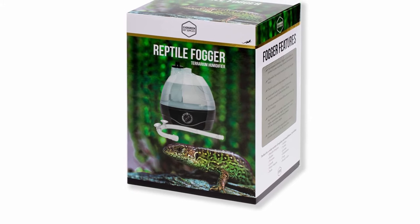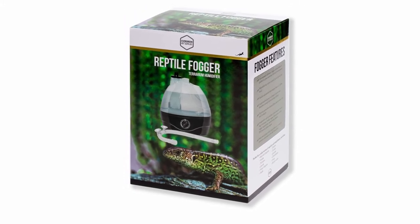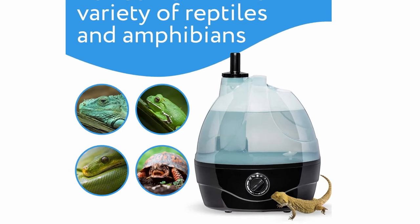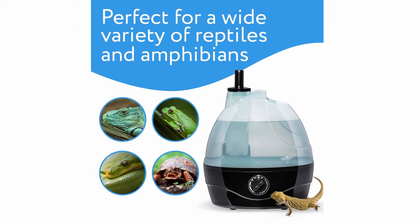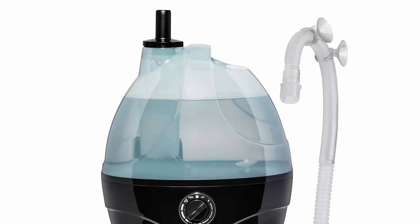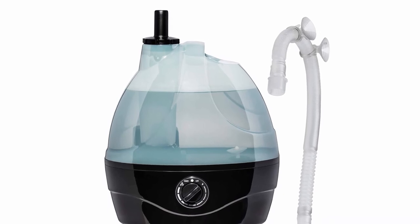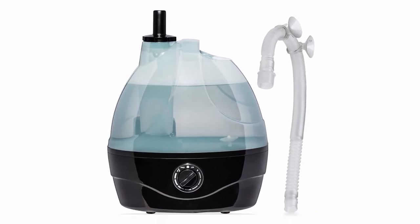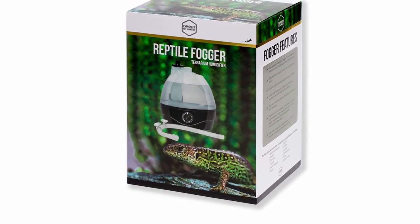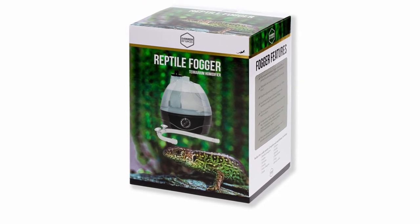In addition to being very quiet, the Evergreen Pet Supplies humidifier also comes with a fogger that can be adjusted. With the adjustable output, you can choose between a light mist or dense fog. Furthermore, the timer enables you to control the humidity in the room in order to perfect the output. In addition, you also get a six-month warranty.